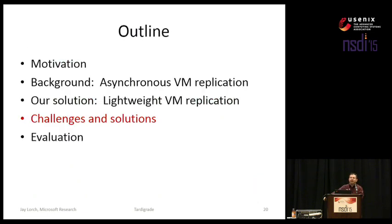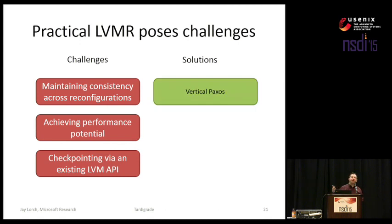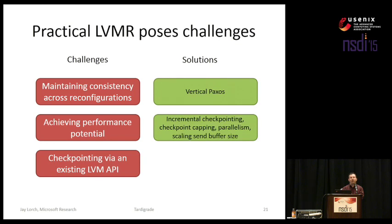Building LVMR has led us to see many challenges in doing so, which I'll share with you along with the solutions we came up with. The challenges fall in three broad categories. First is maintaining consistency — if an unreliable failure detector decides the primary has failed and it's time to switch over to the backup, we choose vertical Paxos to ensure consistency even when reconfiguring in response to an unreliable failure detector. Another challenge is performance potential: we don't have to checkpoint an entire virtual machine anymore, just essentially a process, and there are many techniques we devised to eke out all the available performance potential.